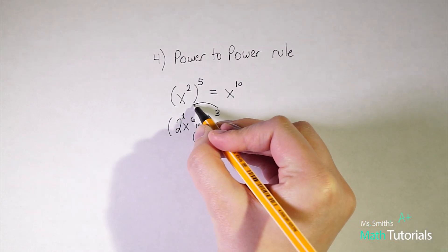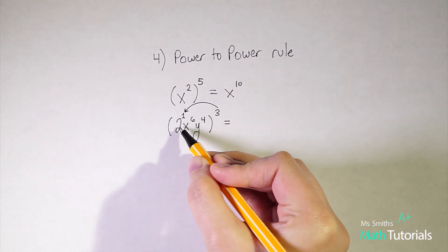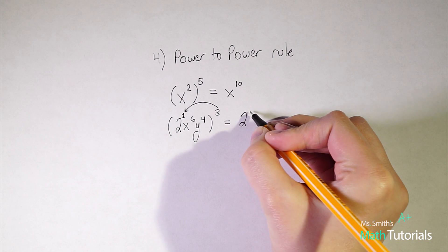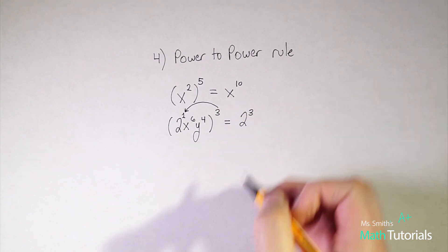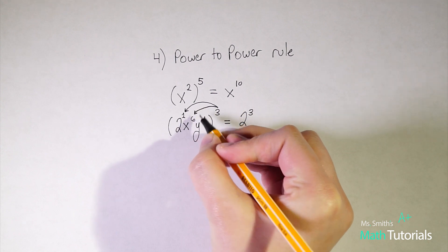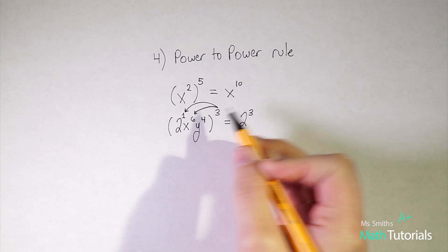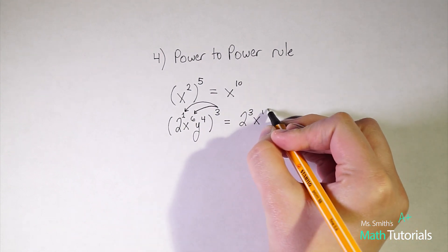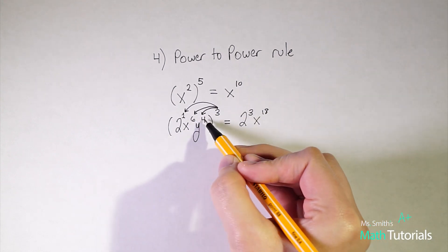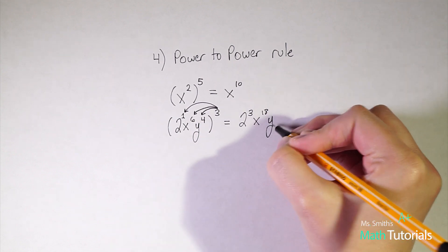When we distribute this 3 we'll start with just the top part or the first part. So 2 to the 1 power brought to the power of 3, 1 times 3 is 3. We'll worry about simplifying that in a minute. We need to continue distributing this 3. So 3 brought to the power, we've got x to the 6 brought to the power of 3, 6 times 3 is 18. We still have one more. We need to distribute to this y to the 4th. So y to the 4th brought to the power of 3, 4 times 3 is 12.